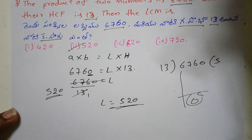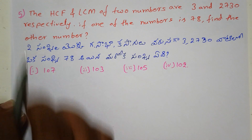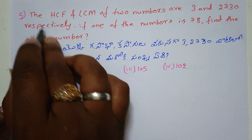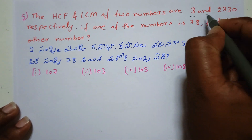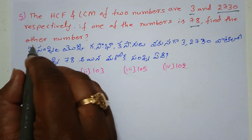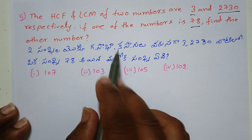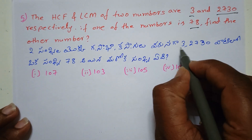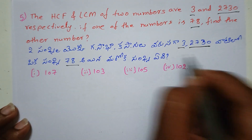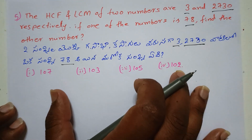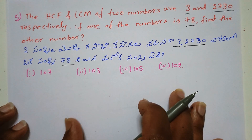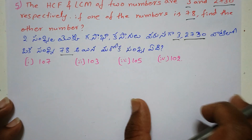Now we will ask: the HCF and LCM of two numbers are 3 and 2730 respectively. If one of the numbers is 78, then find the other number. I will explain this in the next video. Leave your answer in the comments.